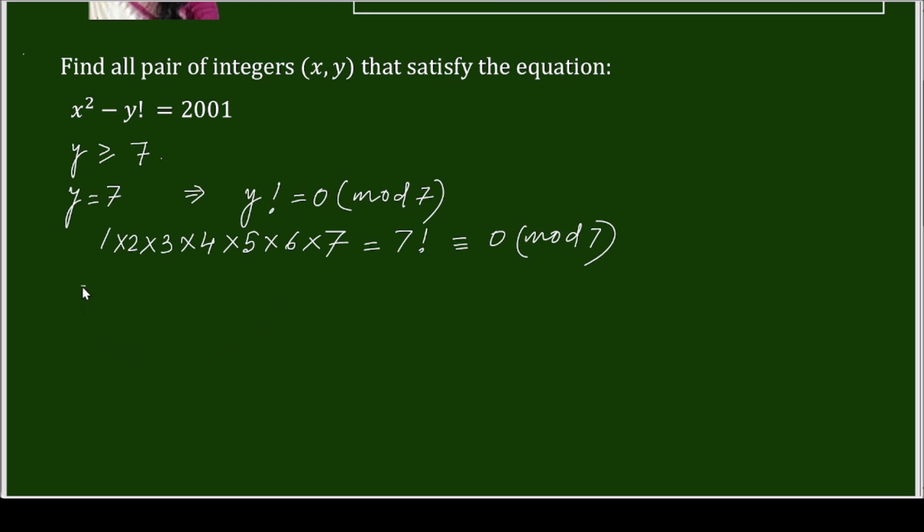So I have taken let y equals to 7. Then that time it will be 0 modulo 7. Then what about x square?